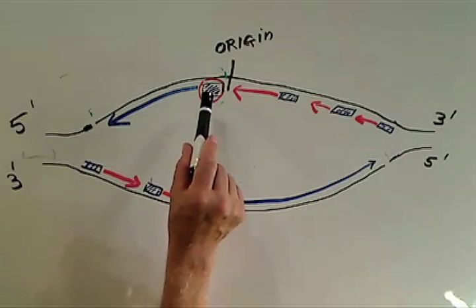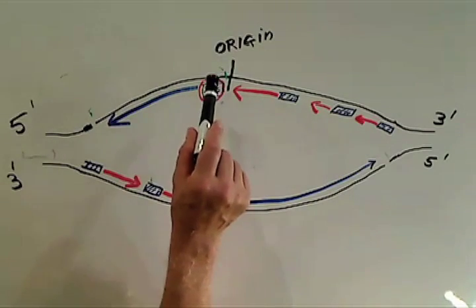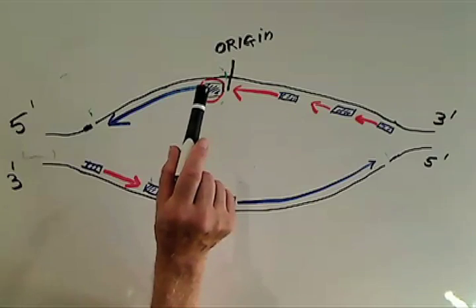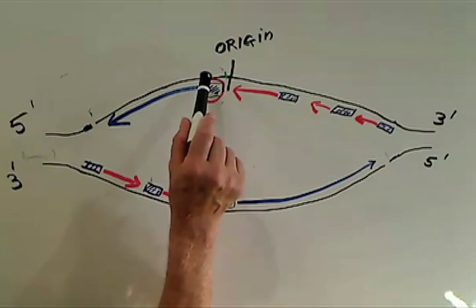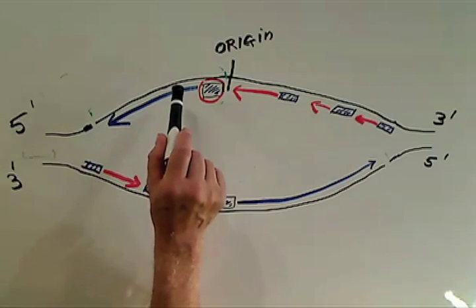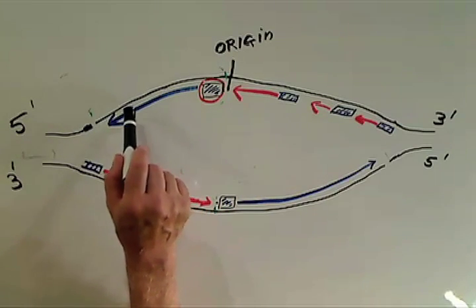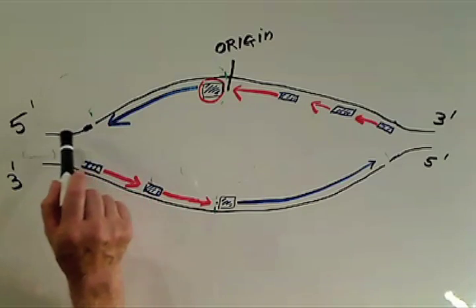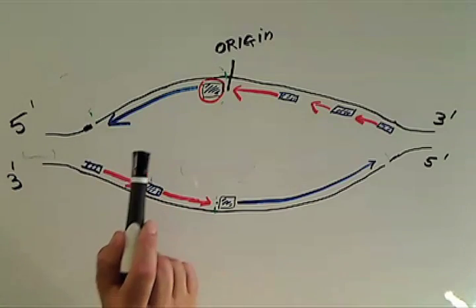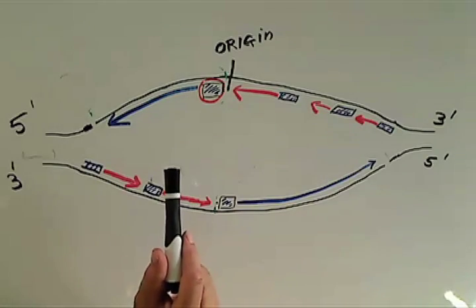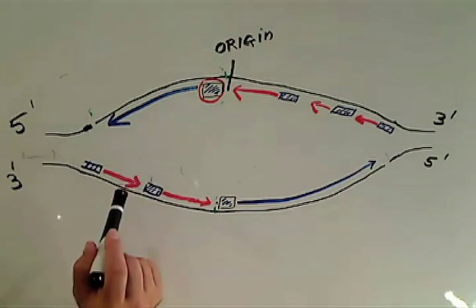The leading strand is fairly straightforward. A primer is put down, the DNA polymerase finds the primer and starts adding trinucleotides 5 prime to 3 prime. As the replication fork moves forward, the polymerase moves forward.